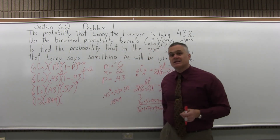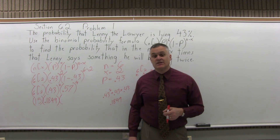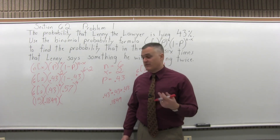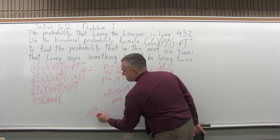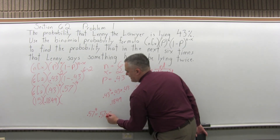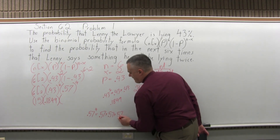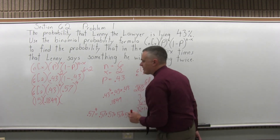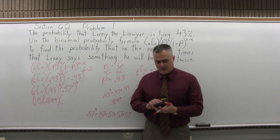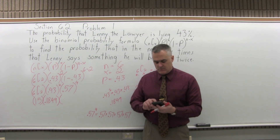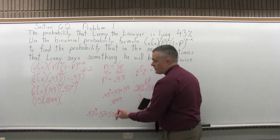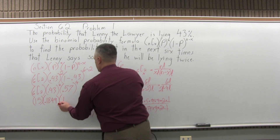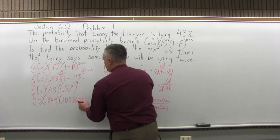And now the last set of parentheses: 0.57 to the fourth power, which is 0.57 times 0.57 times 0.57 times 0.57. I'll definitely need a calculator for that. When you do 0.57 times itself four times, the calculator gives 0.10556001.